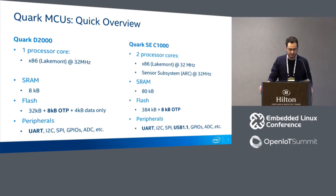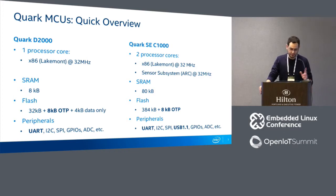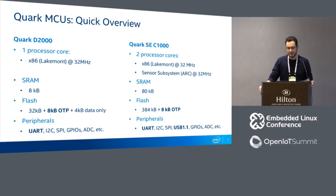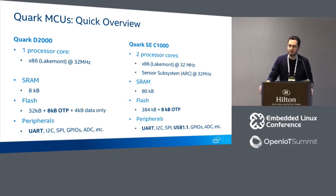Let me first provide an overview of the Quark MCUs so you have an idea of the hardware. Both the D2000 and the C1000 feature an x86 core called Lakemont running at 32 MHz. The C1000 is more powerful: it also has an ARC core as part of its sensor subsystem, more RAM, more flash, and a USB controller.